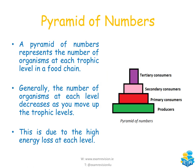A pyramid of numbers represents the number of organisms at each trophic level. A standard pyramid has a large number of producers at the bottom, a smaller number of primary consumers, an even smaller number of secondary consumers, and then an even smaller number of tertiary consumers. The number of organisms at each level generally decreases as you move up, due to the high level of energy loss from level to level.